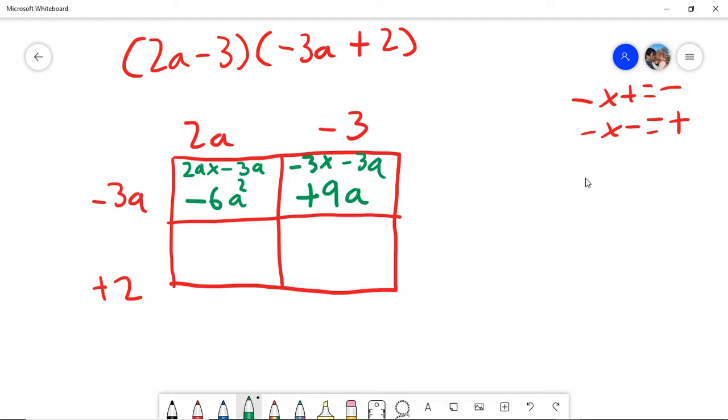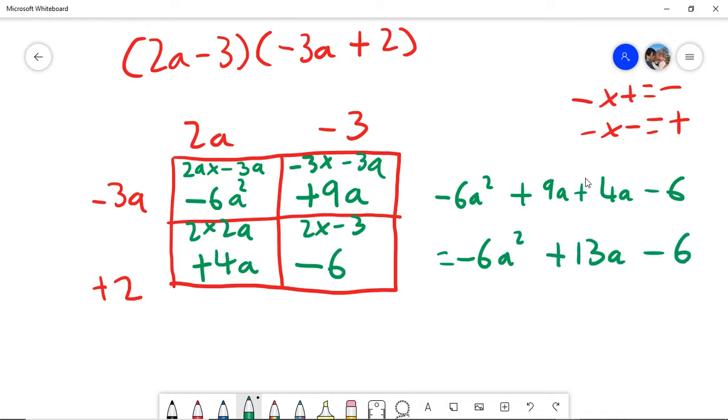Let's do the same here. We've got minus 3 times minus 3a. A minus and a minus. Two negatives multiplied to make a positive. 3 times 3 is 9. And there's only the 1a. This one is 2 times 2a. A positive times a positive is positive. 2 times 2 is 4. And there's only the 1a. Here we've got 2 times negative 3. A positive times a negative is negative. 2 times 3 is 6. And there is no a term here. So that's your answer. Let's write this out. Negative 6a squared plus 9a. Plus 4a. Take 6. And we can simplify that by doing 9a plus 4a is going to be 13a. And that would be the final answer there.